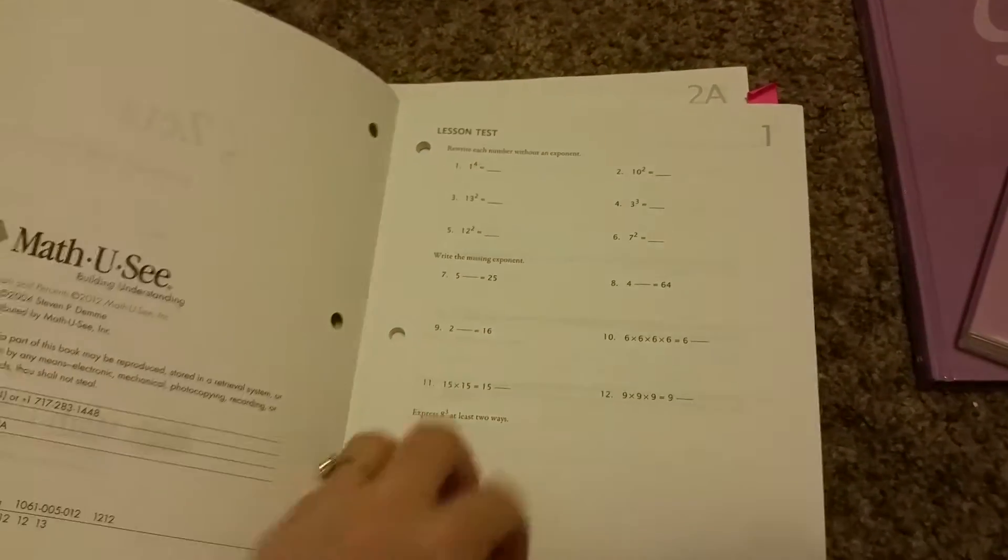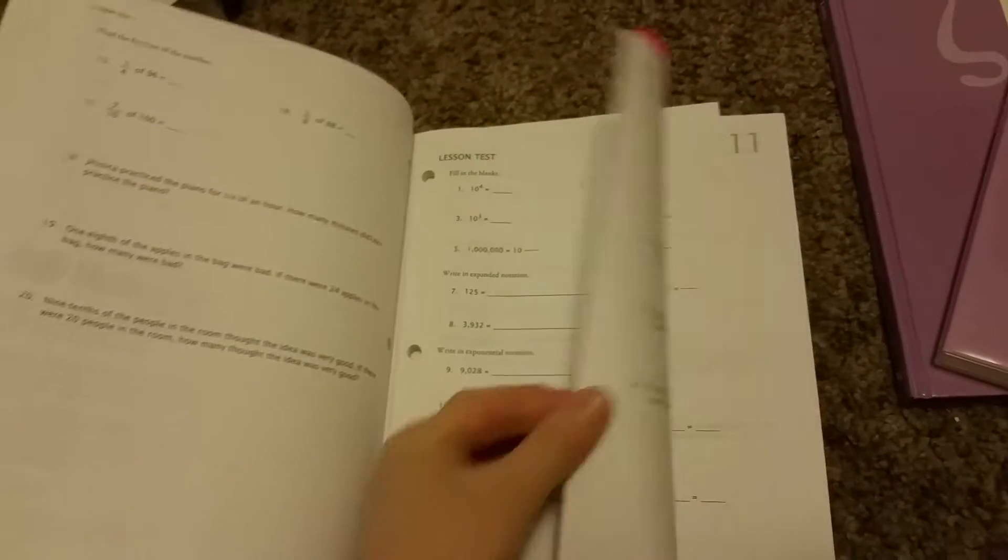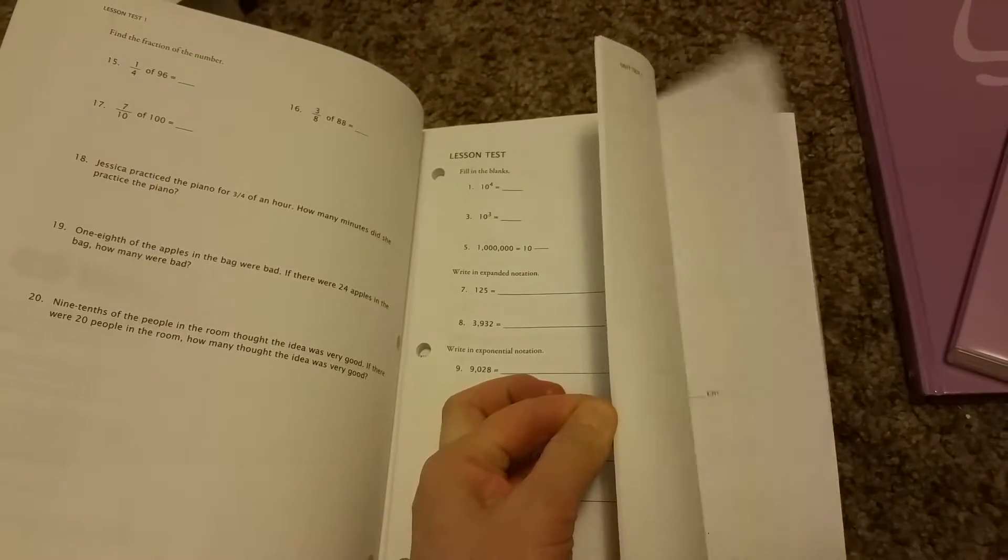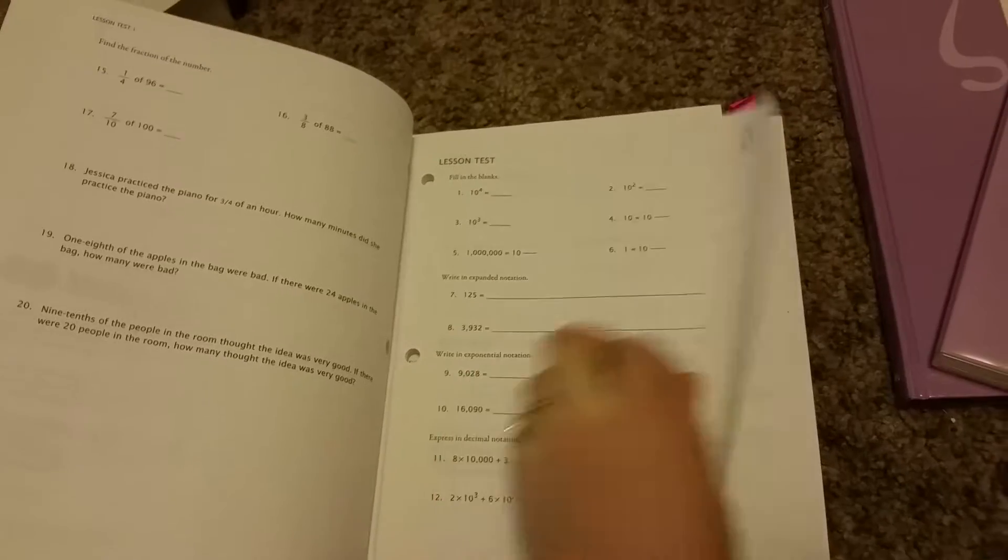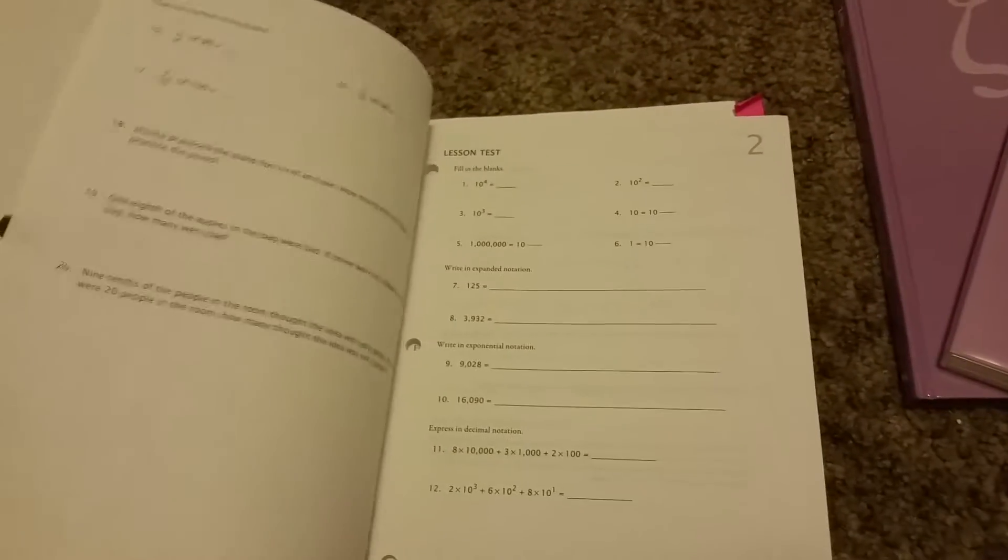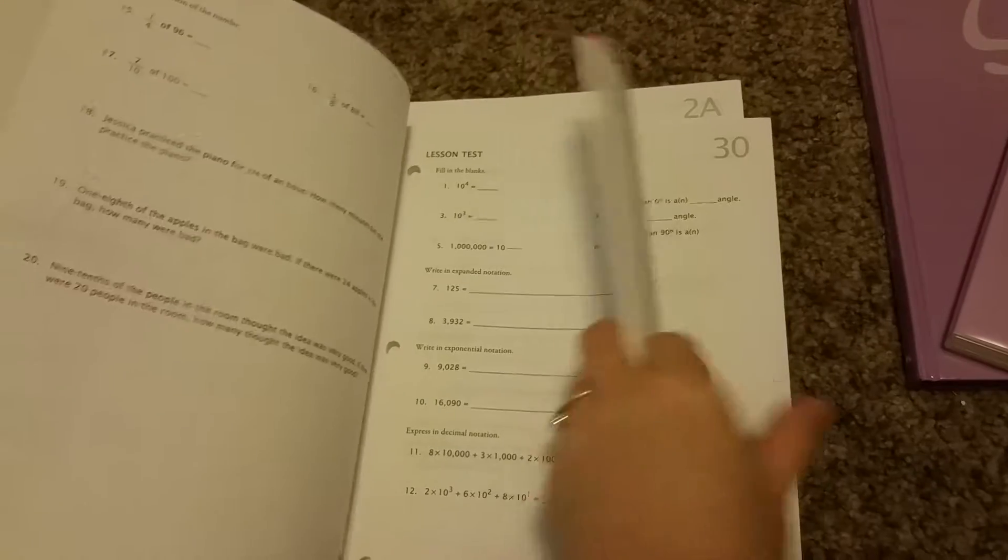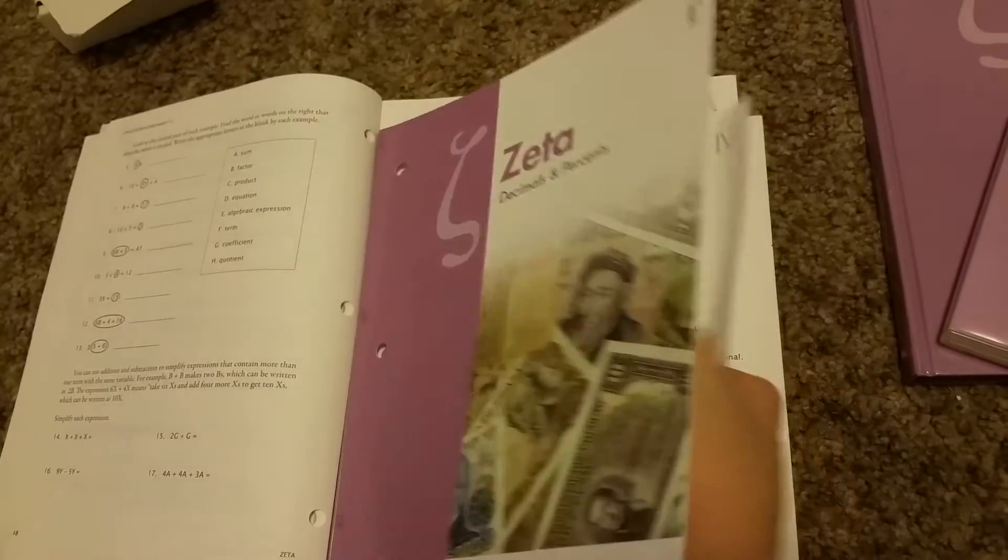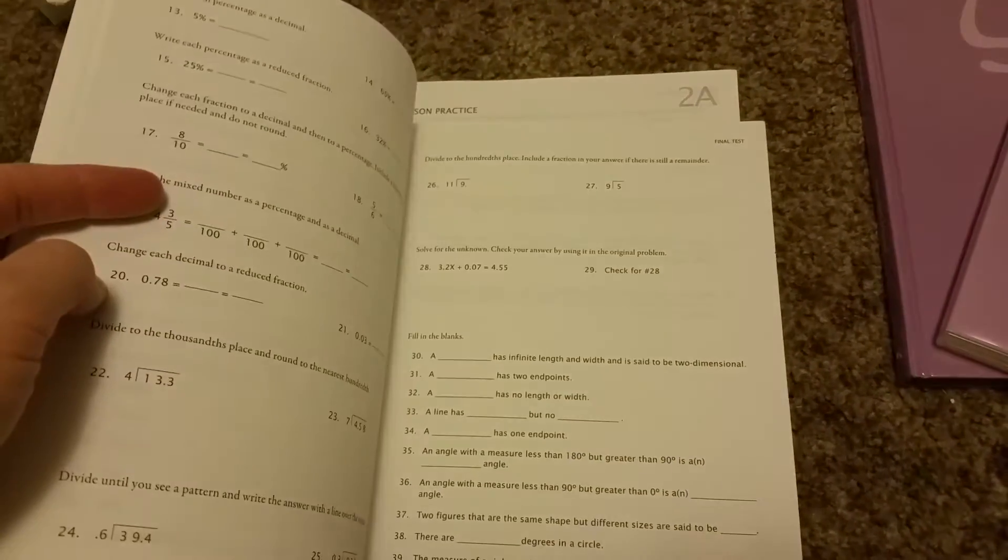And it's just one page. They're always just one page. The unit tests, I think, have two unit tests that are a few pages long. And then they have the final test at the very end, after lesson 30.